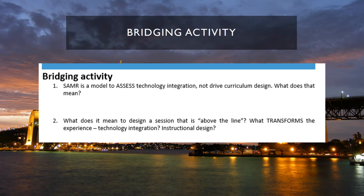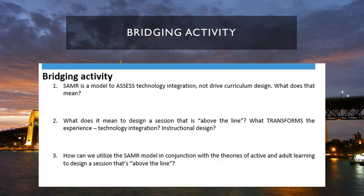You also said that the SAMR model tells us what it means to transform a learning experience to ensure it's above the line in terms of technology. The main point being that when technology transforms the experience, it does tend to move the design toward learner-centered education. It tends to transform the role of instructor and learners so that learners are actively making sense of key concepts, applying them in real time, and participating in teaching themselves and peers. In this way we can see the interconnection between the theories of active and adult learning and the SAMR model.